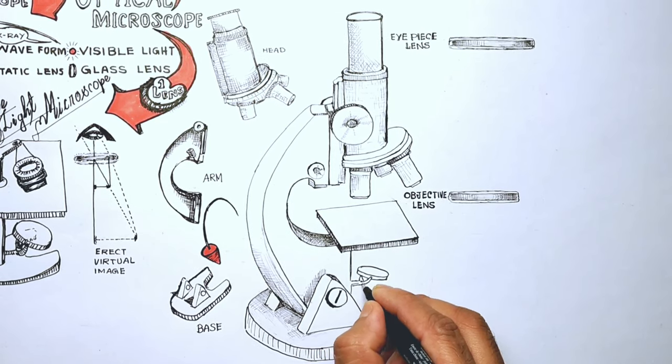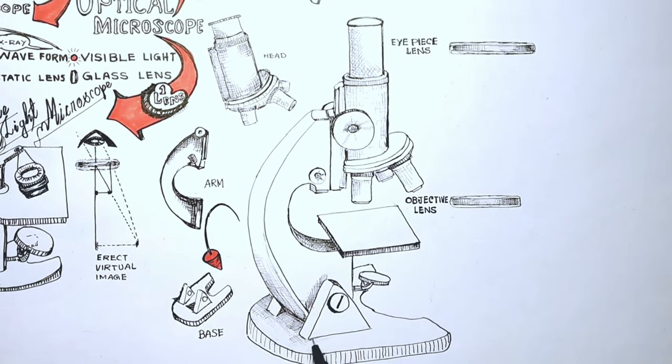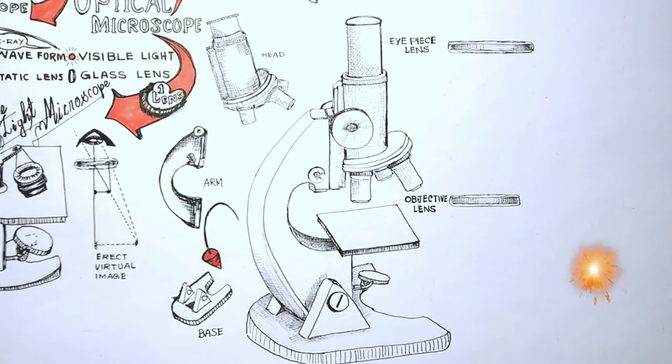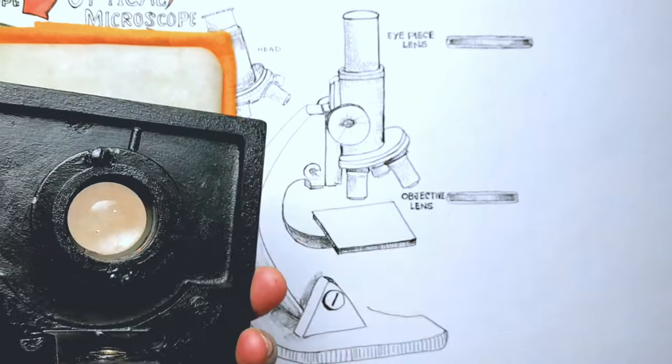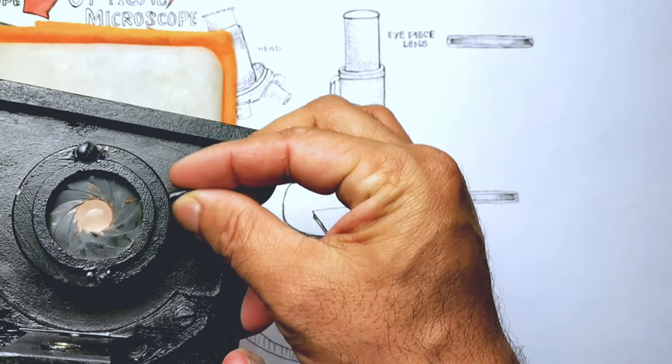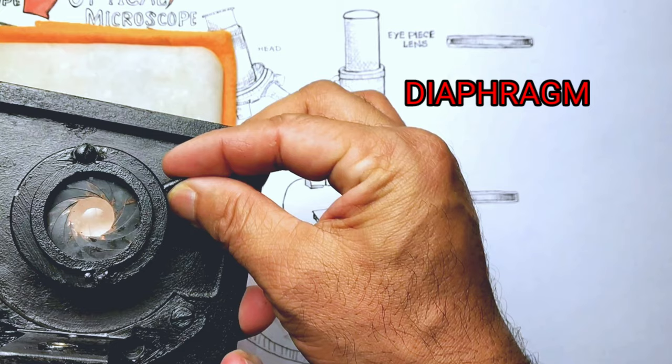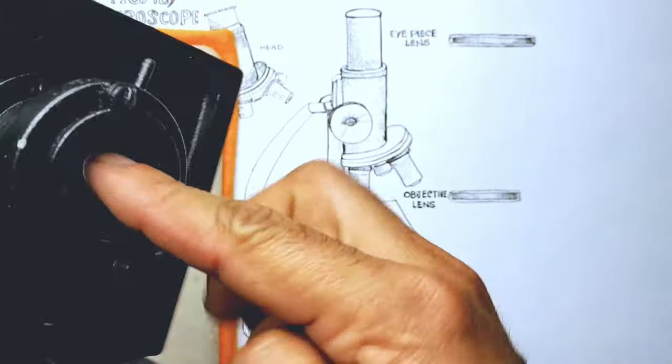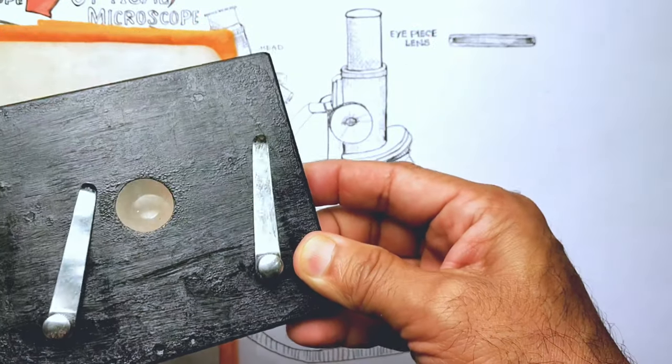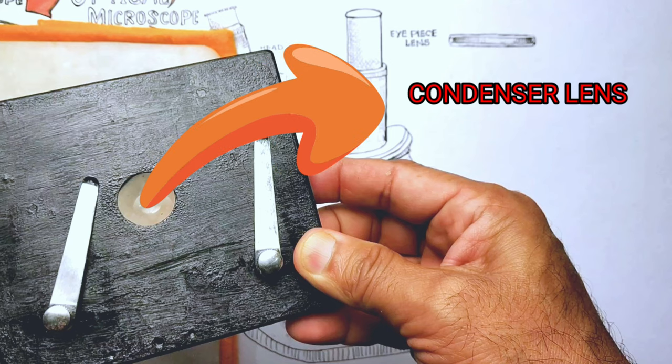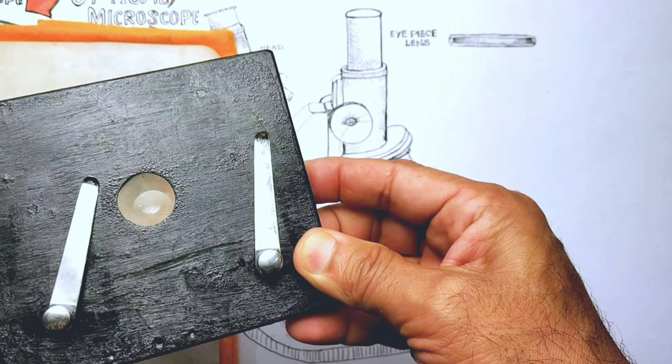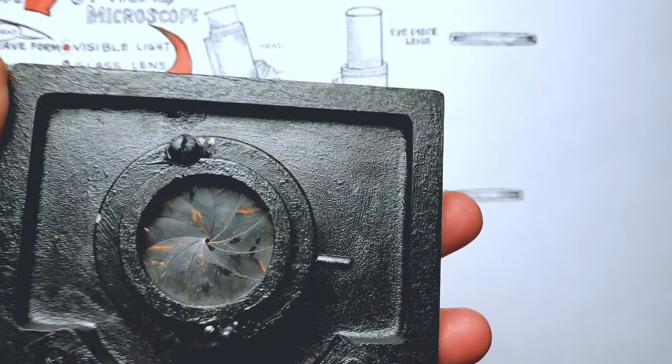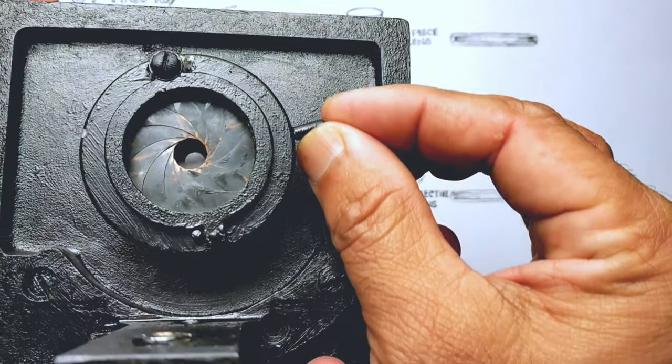The base supports the microscope and houses the illuminator. The illuminator is the light source. It may be a low voltage halogen bulb or a small mirror that reflects the light through the stage aperture. Above the mirror, an iris also known as a diaphragm is also present. Irish helps in controlling the amount of light passing above towards the specimen. There may be a condenser lens just above the diaphragm and immediately under the stage. Light rays from the illuminator are condensed by the condenser lens and focuses a cone-shaped beam of light onto the specimen through the stage aperture.